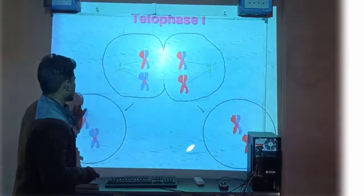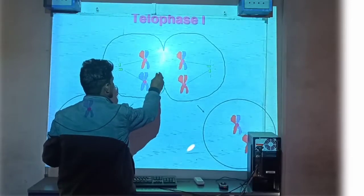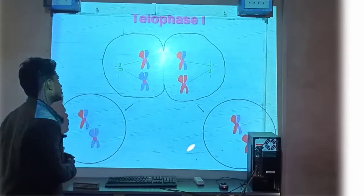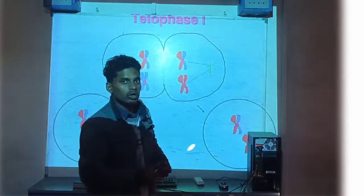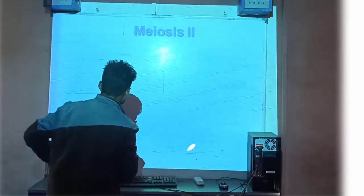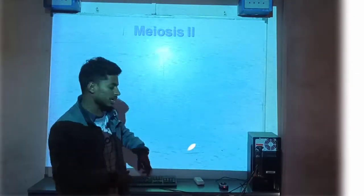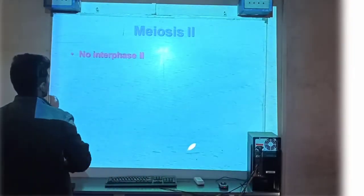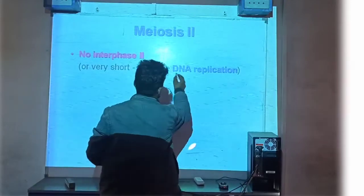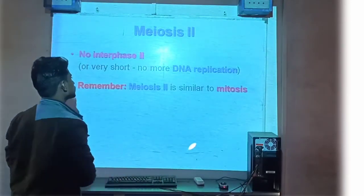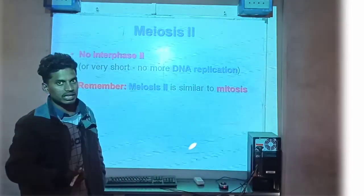दो नए cells बनकर तैयार हो गए। Parental cell में four chromosomes थे — two pairs of chromosomes। Meiosis second की बात करते हैं — अब two cells हैं जो meiosis second में जाएंगी। Meiosis second में no more DNA replication। Meiosis second is similar to mitosis।